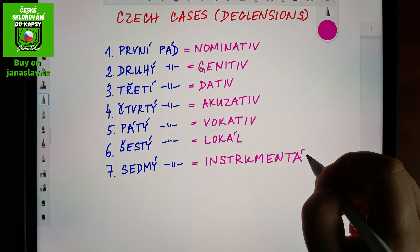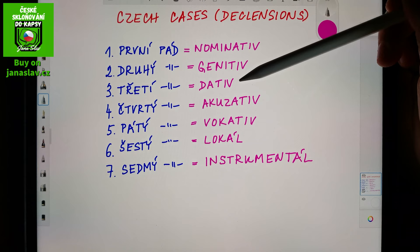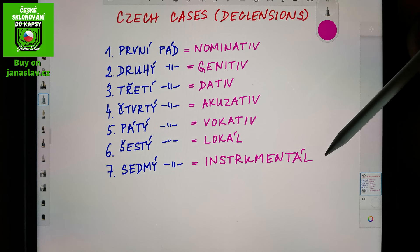So to recap: nominativ, genitiv, dativ, akuzativ, vokativ, lokál, instrumentál.